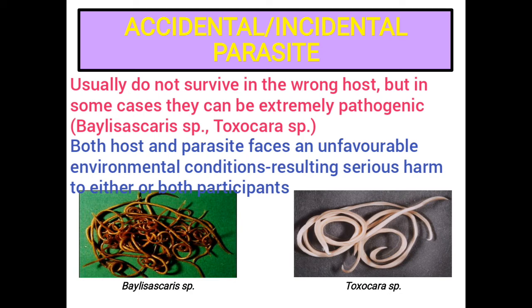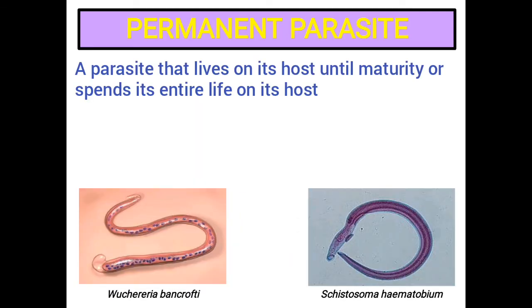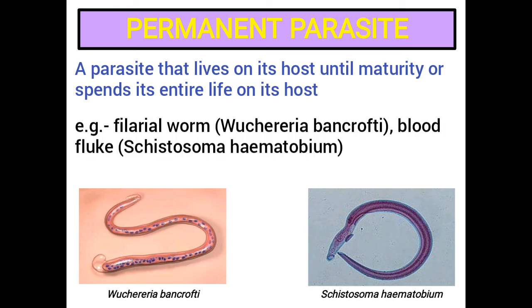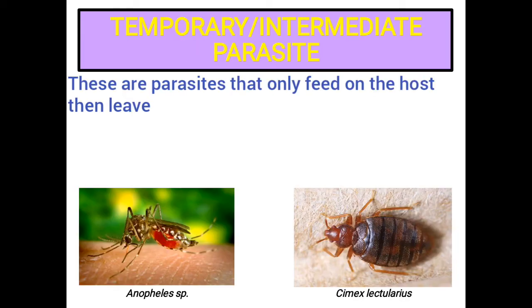Accidental parasitism puts both host and parasite into environmental conditions to which neither is well adapted, so the result may be serious harm to either or both participants. Permanent parasites: A parasite that lives on its host until maturity or spends its entire life on its host. Examples include filarial worm, Wuchereria bancrofti, blood fluke, and Schistosoma haematobium, which are permanent parasites of humans.